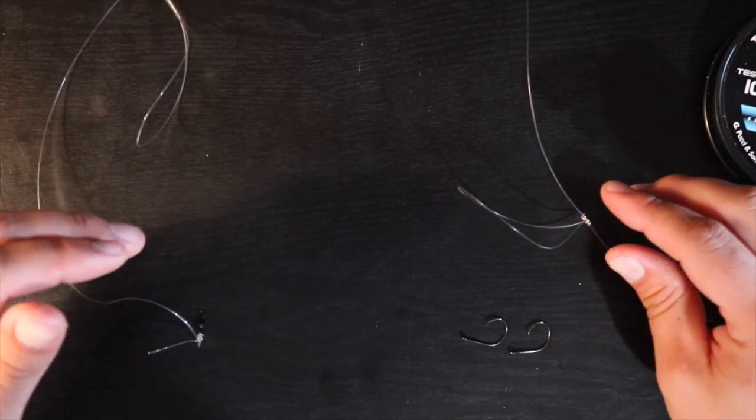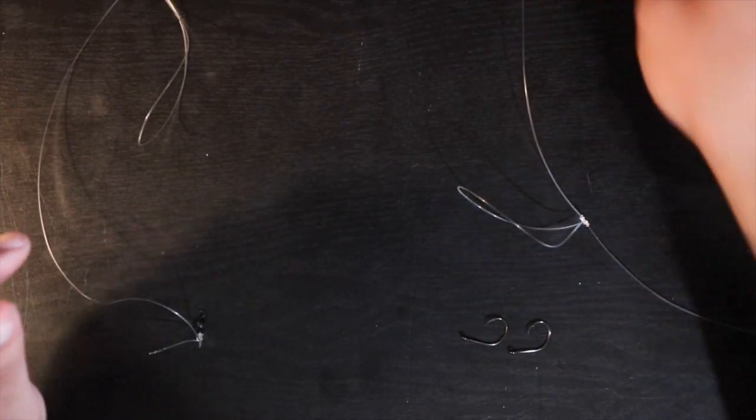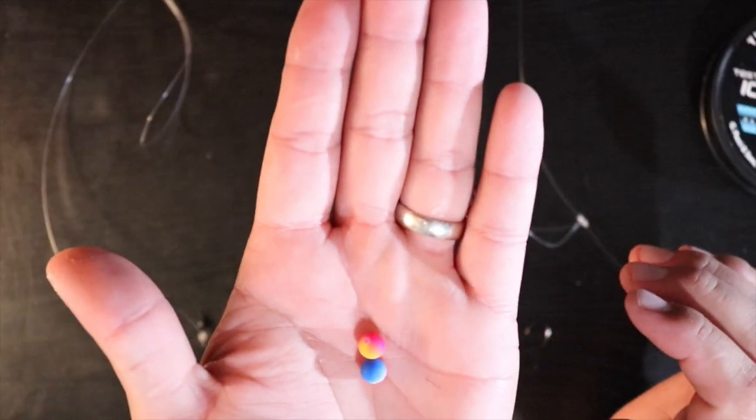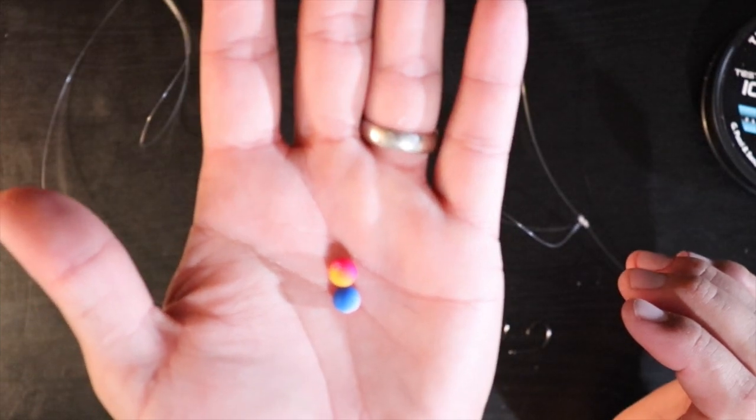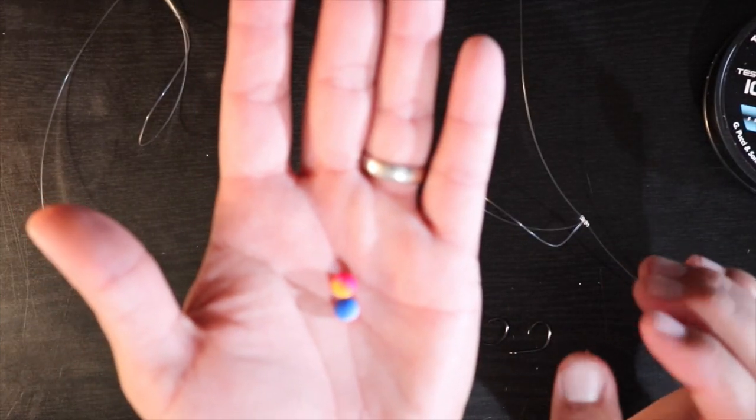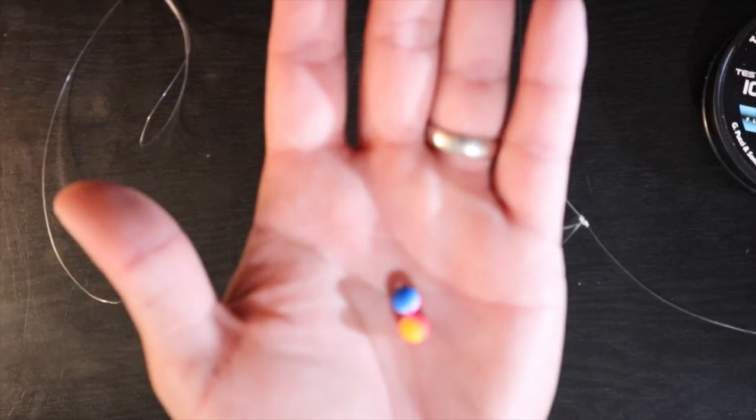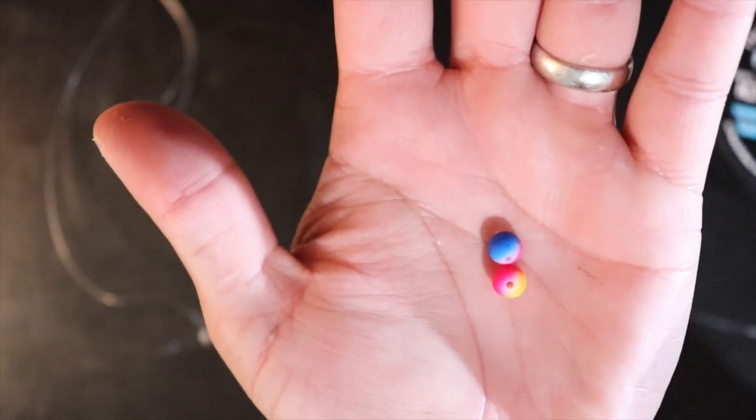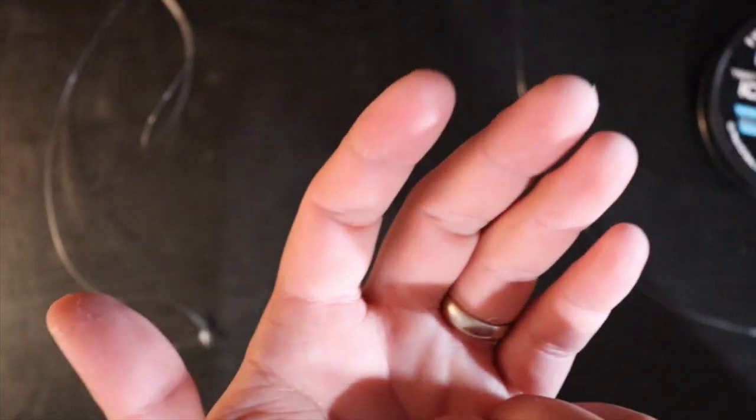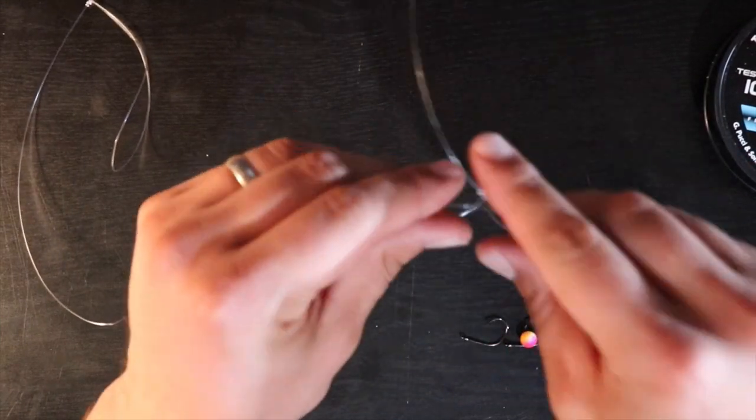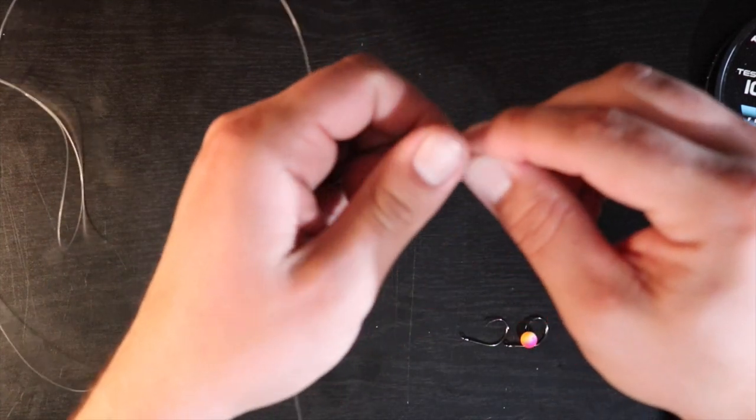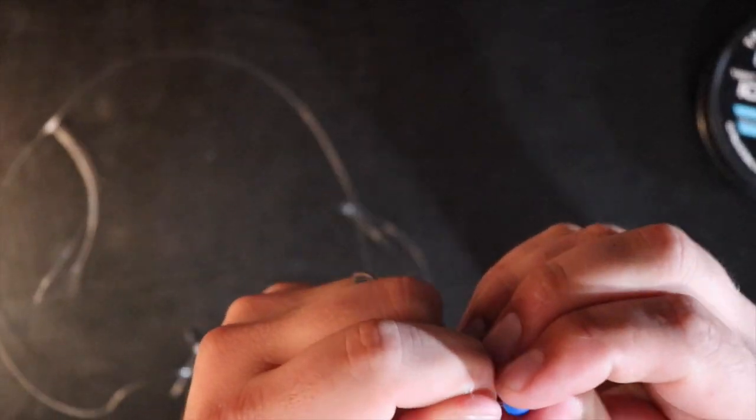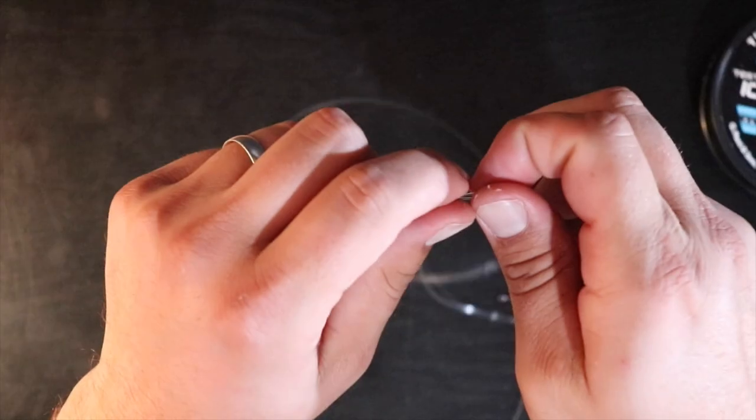All right, so next up for the whiting rig is we got our beads. I know a lot of y'all with pompano rigs, we use a lot of different floats, different sizes, different colors. Well, the whiting rigs, I like to just stick with a bead. These two I got today, I got an orange and pink, and then I got a like blue and pink. But really any color you want to use is just fine. And so I'm going to take one bead and thread it on this drop, just like so.